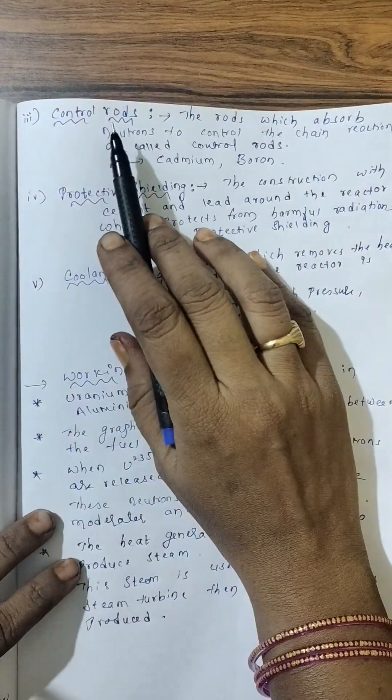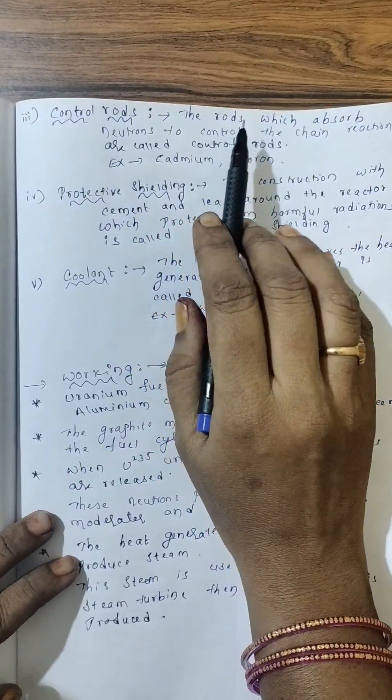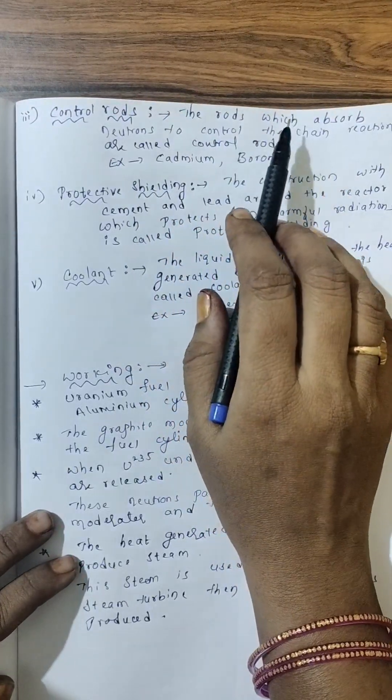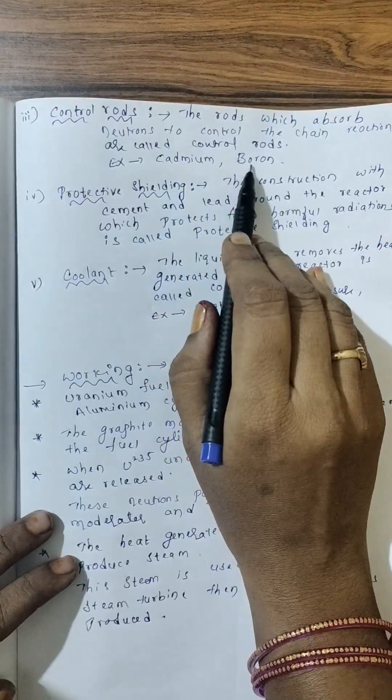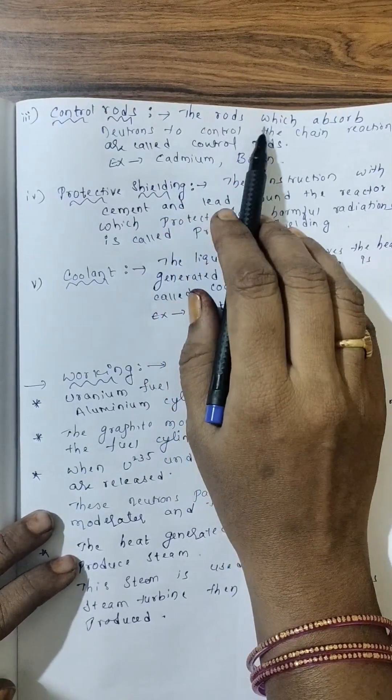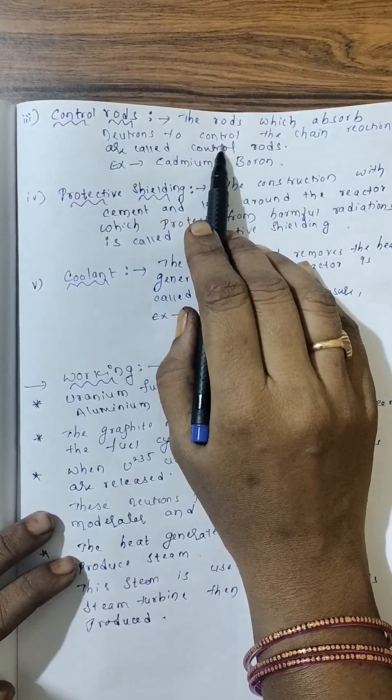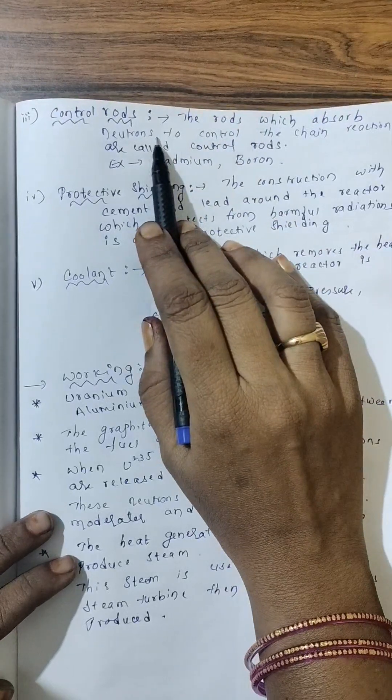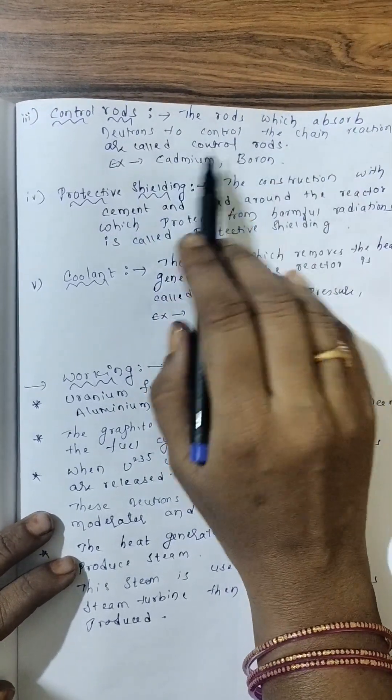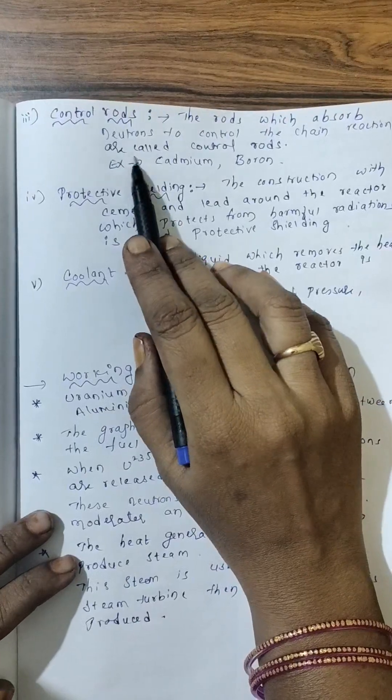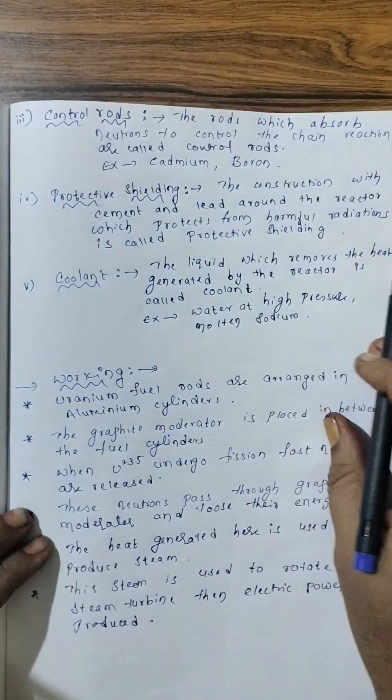So if we can control this, then it can be used for useful purposes such as generating the nuclear electricity. So now here, control rods controls that particular neutrons. So control rods are cadmium and boron. The rods which, how they control the neutrons? They absorb the neutrons. The rods absorb the neutrons to control the chain reaction. We call it as control rods.